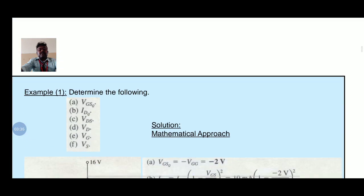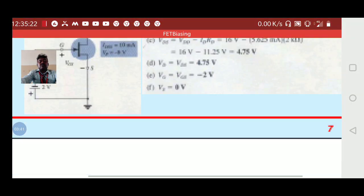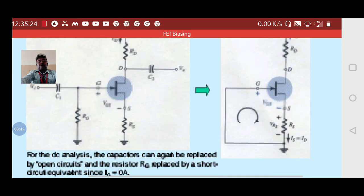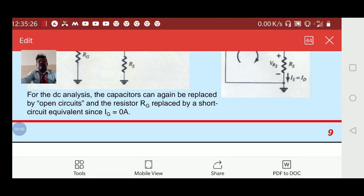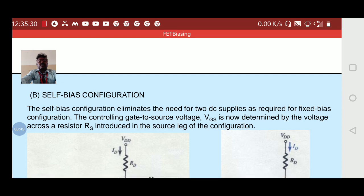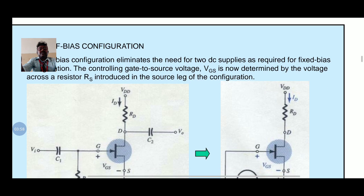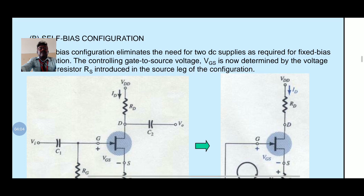These are all the problems related to the fixed bias configuration. After the fixed bias configuration, we are going to see about the self bias configuration. The self bias configuration eliminates the need for two DC supplies as required for the fixed bias configuration. The controlling gate to source voltage VGS is now determined by the voltage across the resistor RS introduced in the source leg of the configuration.